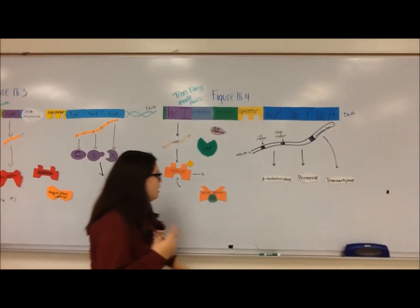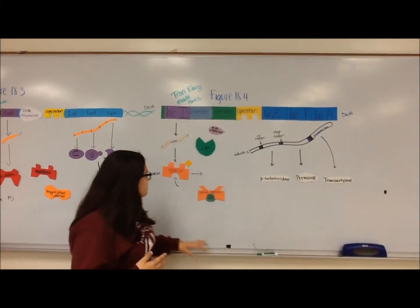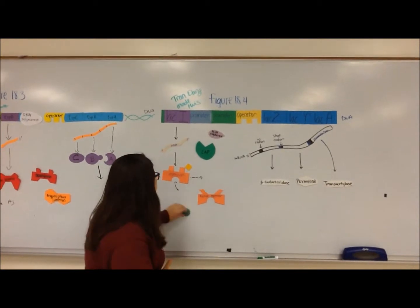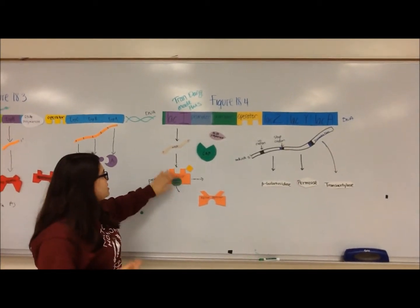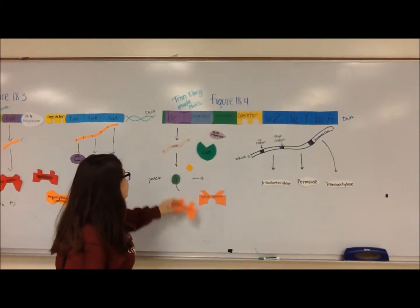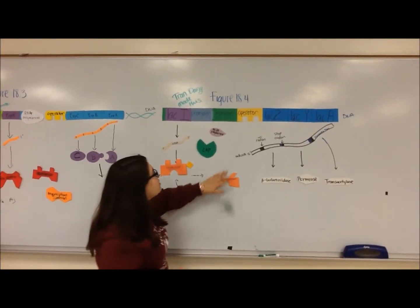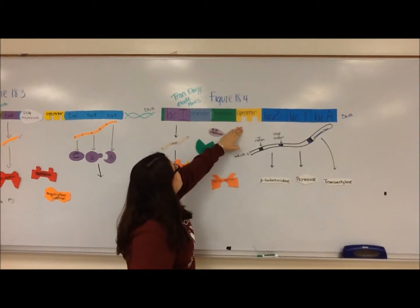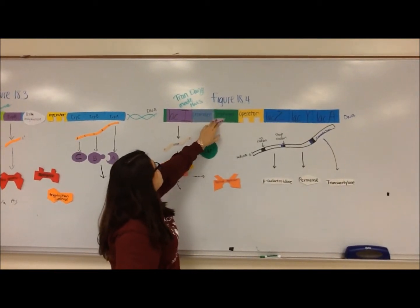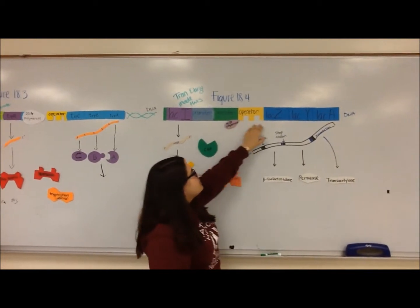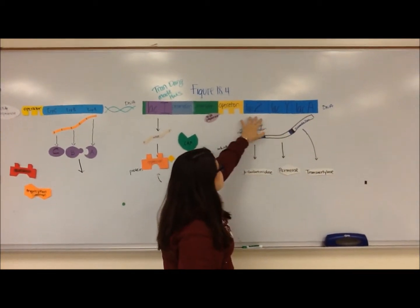When there is a high concentration of lactose, the inducer allolactose can bind to the active repressor, changing its shape and inactivating it. Now that the repressor is inactive, it can no longer bind to the operator and RNA polymerase can bind to the promoter and allow for the transcription of these genes.